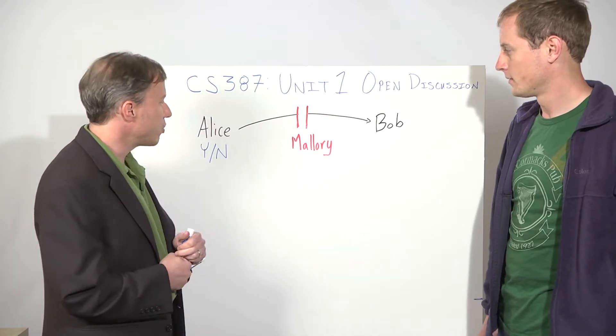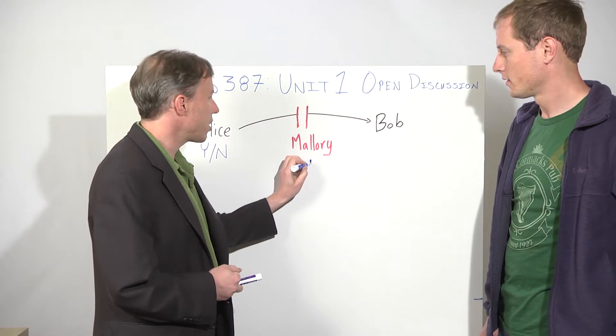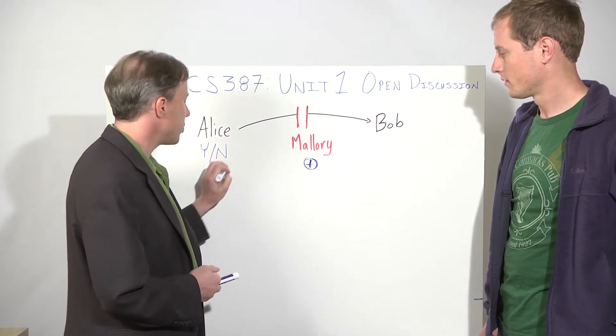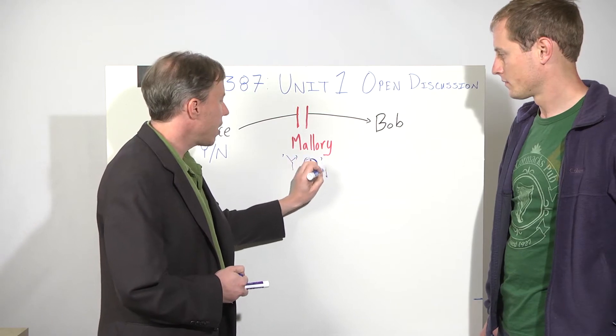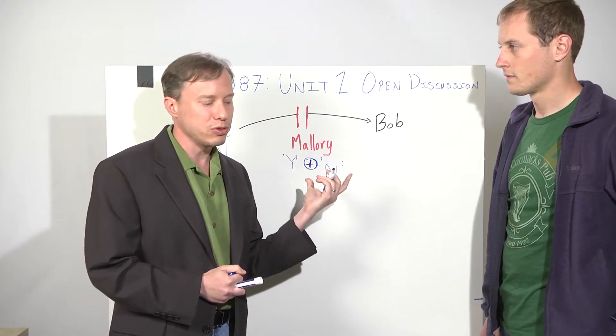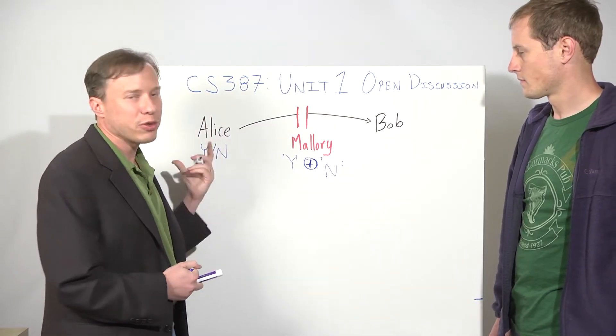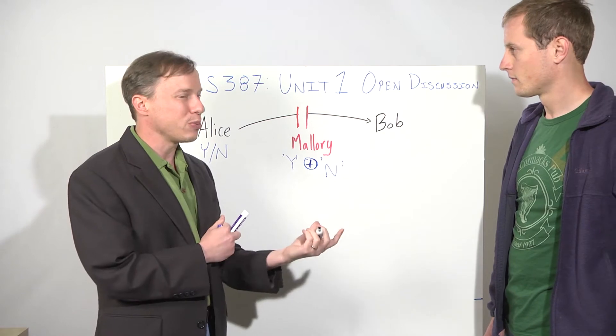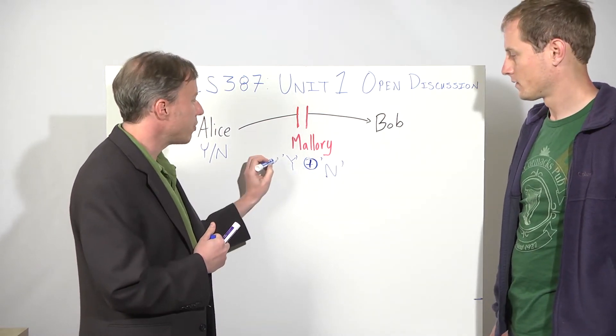And we saw in the question that Mallory could, whatever she intercepts, she can't tell whether it's yes or no, but she can XOR it with the difference between yes and no, and that will flip the answer.